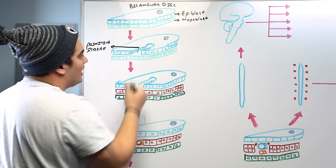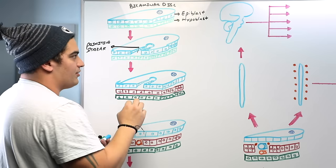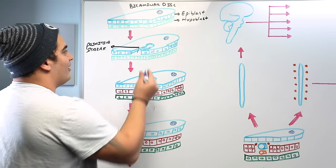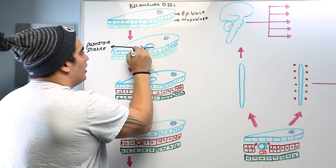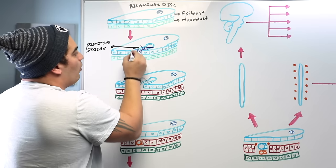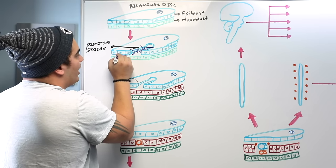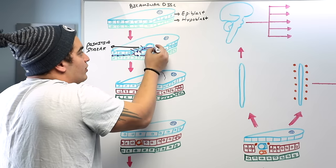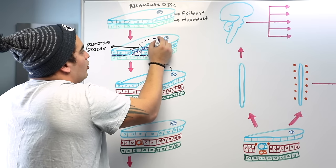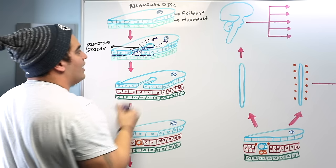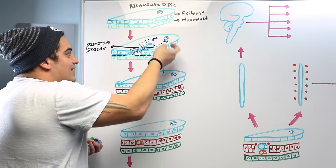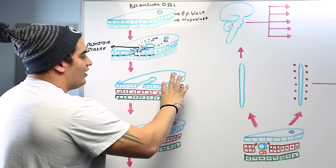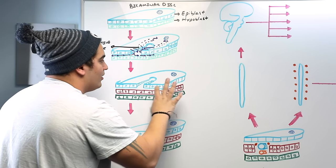Some of these epiblast cells start becoming mobile and move down through this primitive streak. When they do, they move in between the epiblast and hypoblast layers, and also move towards the cranial end. As these epiblast cells migrate through the primitive streak, sandwiching in between the layers and moving cranially, they convert the bilaminar disc into the trilaminar disc.